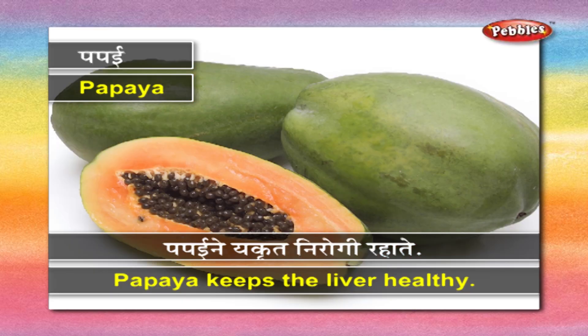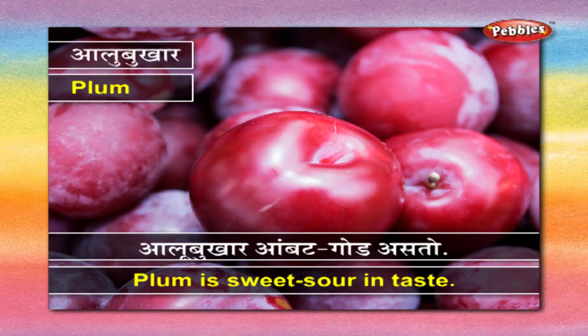पपई - पपईने यकृत निरोगी रहते. आलू बुखार - आलू बुखार आंबट गोड असतो.